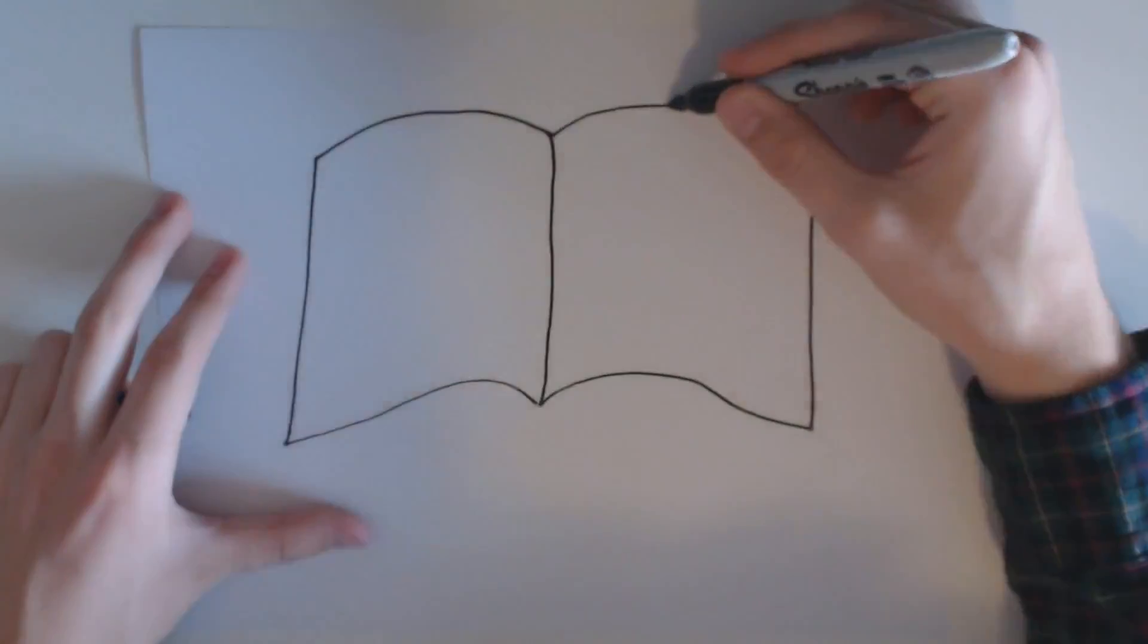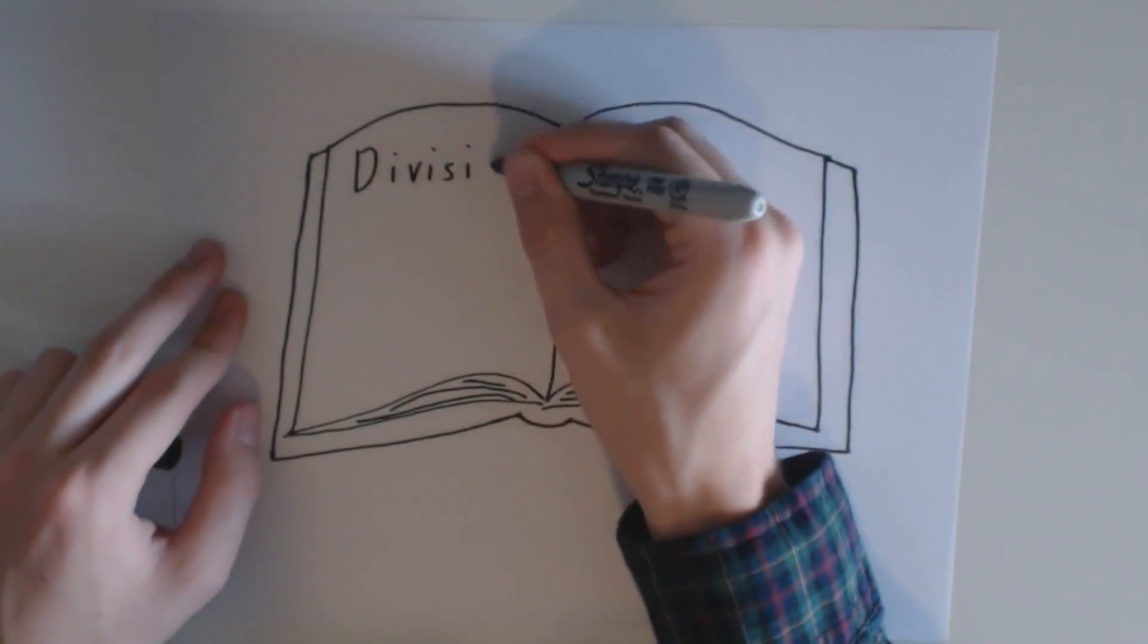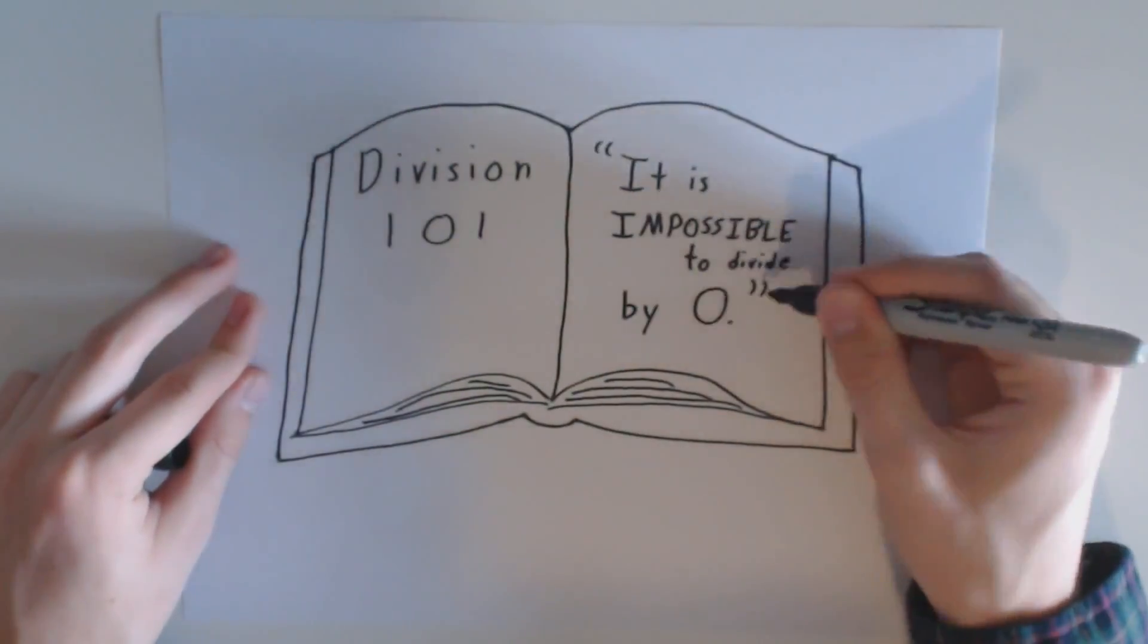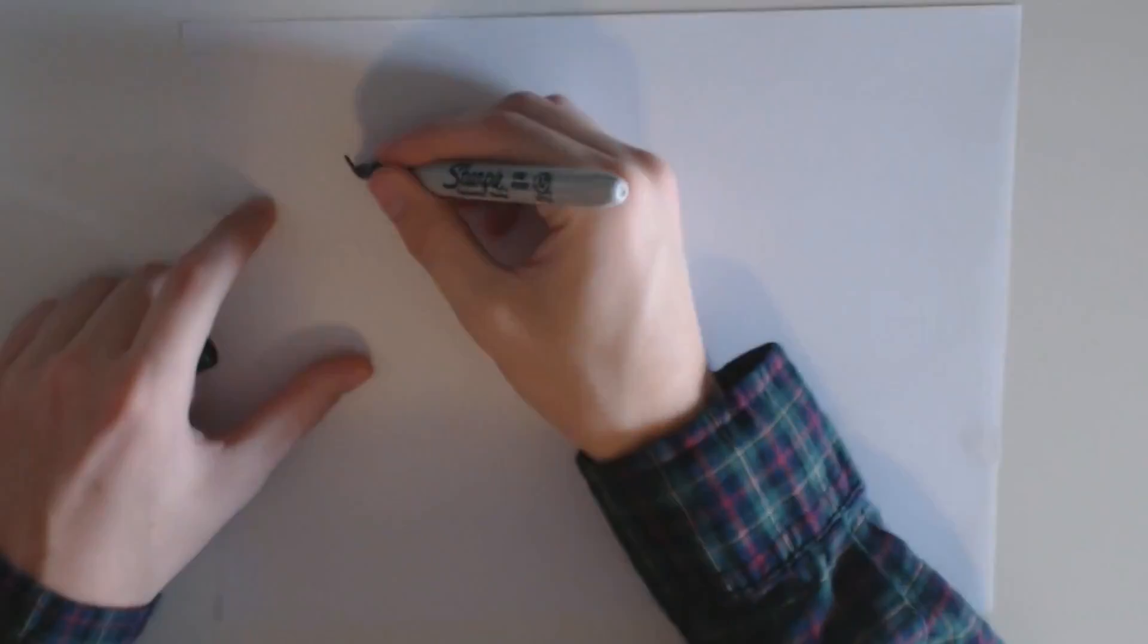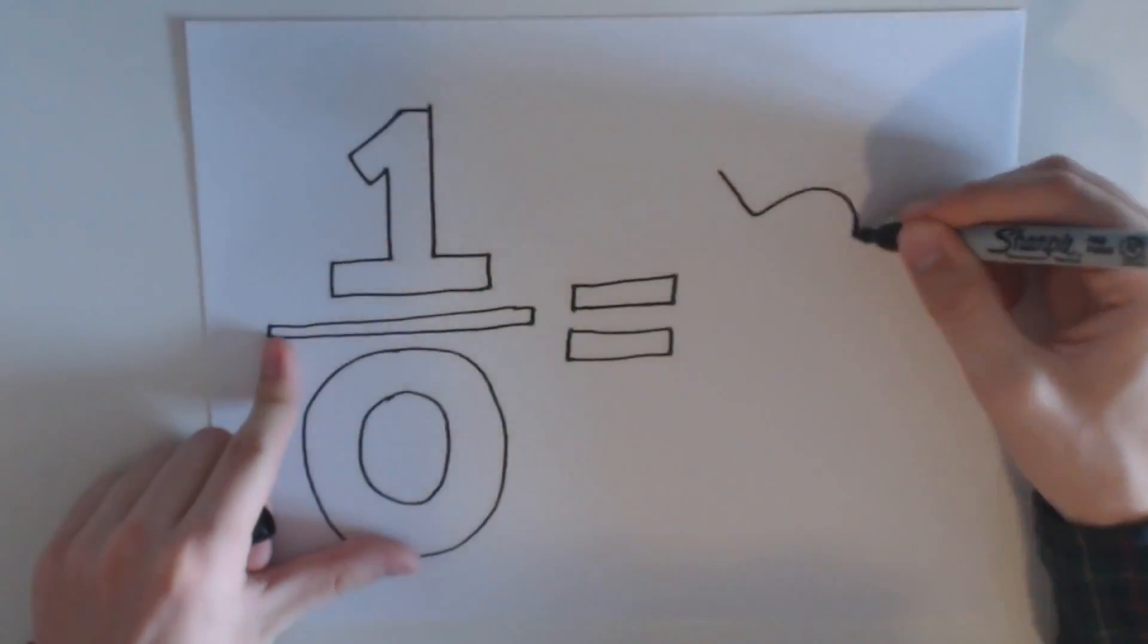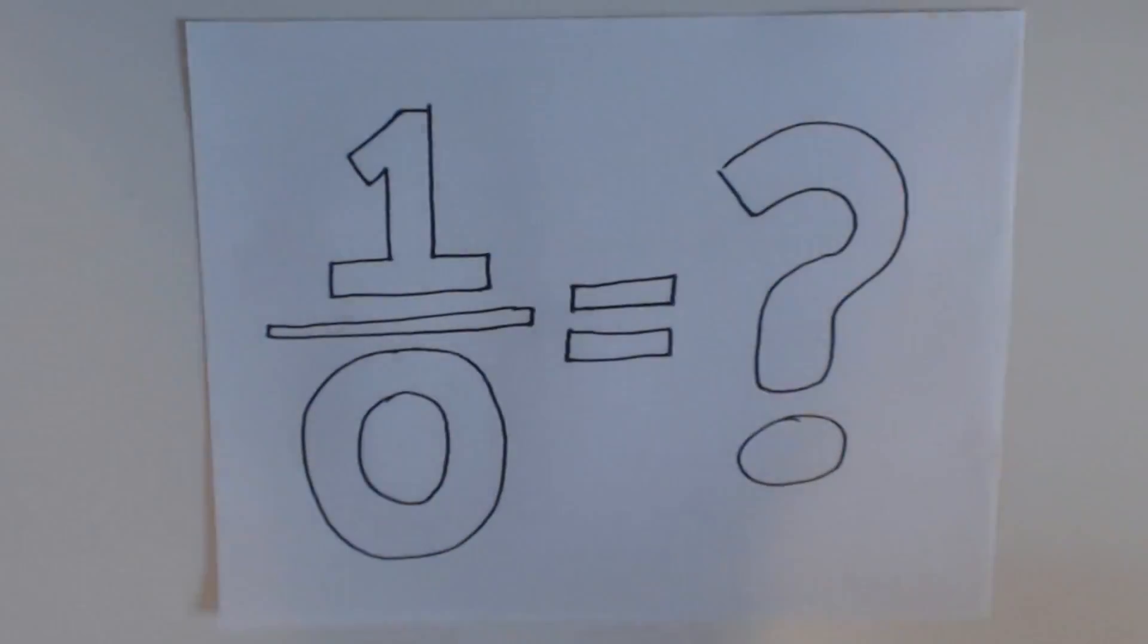In my algebra textbook, there was a lesson on division that clearly stated it is impossible to divide by zero. According to the text, the expression one divided by zero has no answer. I was dumbfounded.